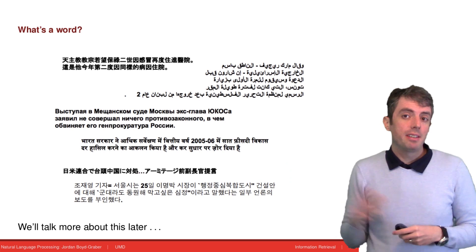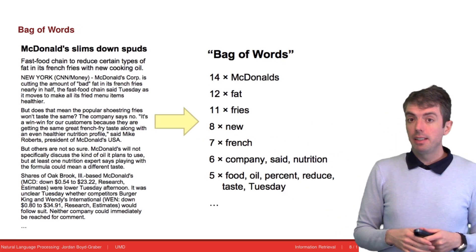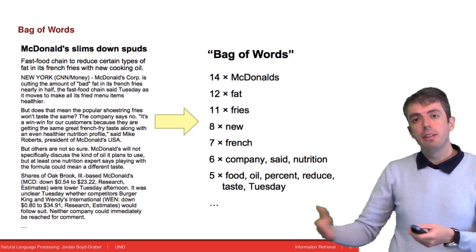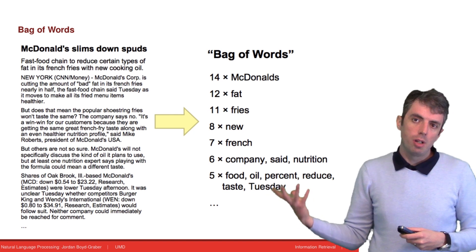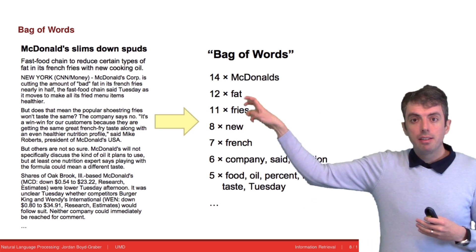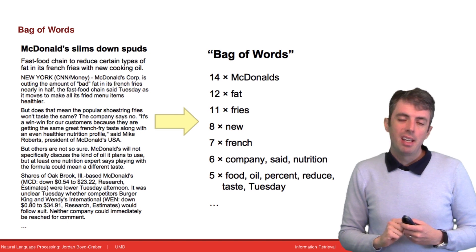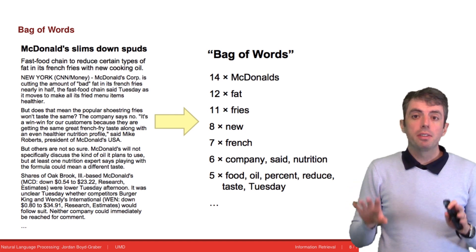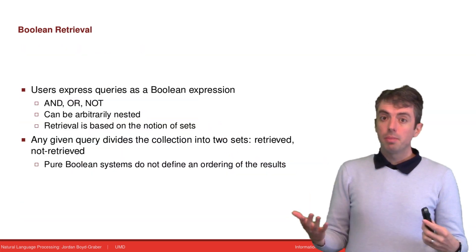A key assumption common in information retrieval is something called the bag of words assumption. When you're just trying to find relevant documents, you don't necessarily care about the context that terms appear in. As a result, you just take a document, find all the terms that appear in it, and count up how many times they appear. This is horribly simplistic and a totally boneheaded thing to do, but it often works and makes the engineering challenges of information retrieval more tractable.